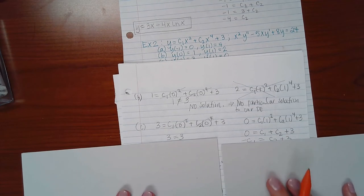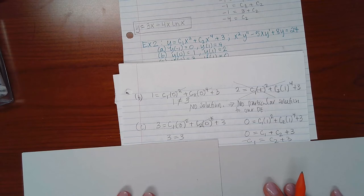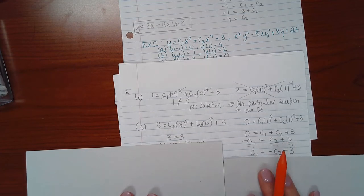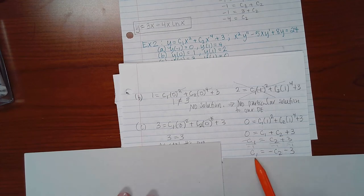However, I chose to try to solve for C1. So I minused C1 on both sides of the equation and ended up with negative C1 equal to C2 plus 3. And then I divided everybody by a negative 1 so that I ended up with positive C1 equal to negative C2 minus 3. And that's the relationship that I have.